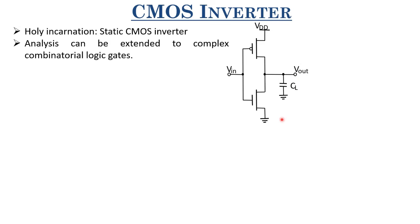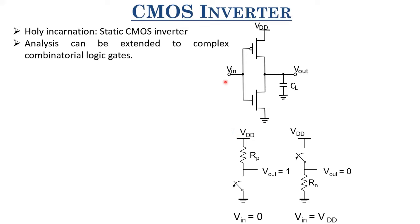A simple switch-based representation: MOSFETs typically act like switches. An ideal switch has infinite off-resistance — no current flows — and a finite, pretty small on-resistance which we call R_on. R_off is pretty high and R_on is pretty small.